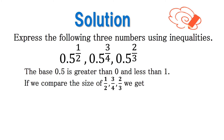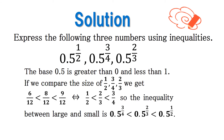The base 0.5 is greater than 0 and less than 1. If we compare the size of 1 half, 3 over 4, and 2 over 3, we get that 6 over 12 is less than 8 over 12, which is less than 9 over 12. So the inequality is 0.5 to the 3 fourths power is less than 0.5 to the 2 thirds power, which is less than 0.5 to the half power.